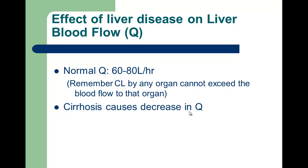Cirrhosis can cause a decrease in Q. In cirrhotic disease, normal liver cells are destroyed and replaced with scar tissue, so blood can't flow normally through the liver, resulting in an effective decrease in hepatic blood flow.